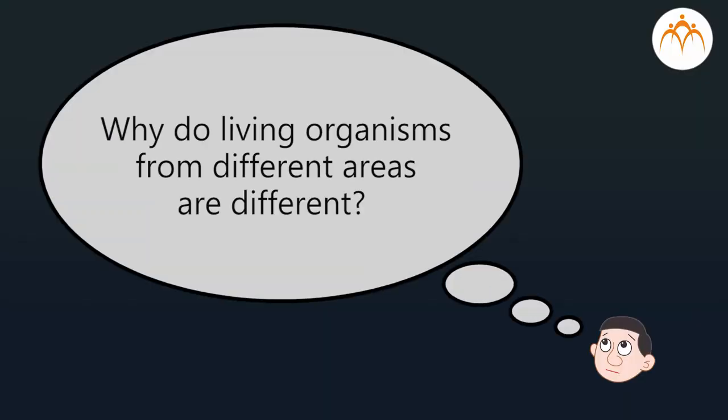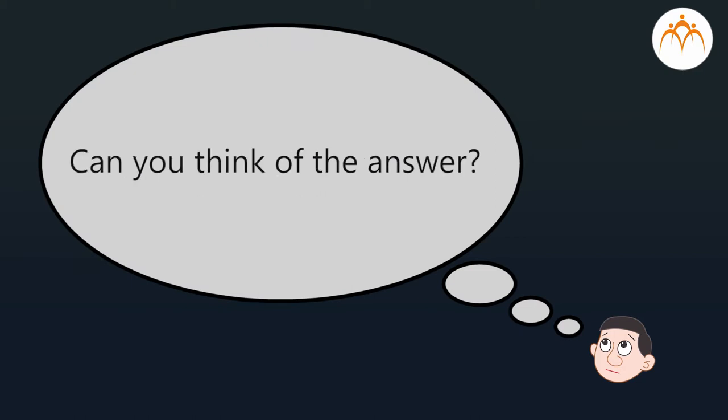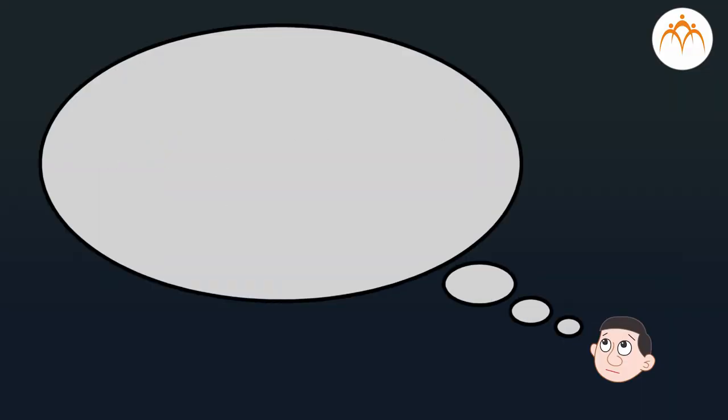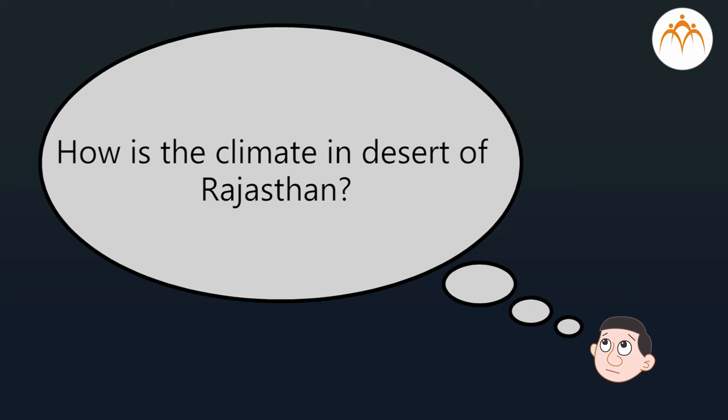You will find that they also show a lot of variety. Now the question is: why are living organisms from different areas different? Can you think of the answer? It is because the climate is different in different regions. Let's consider the following example: how is the climate in the desert of Rajasthan?